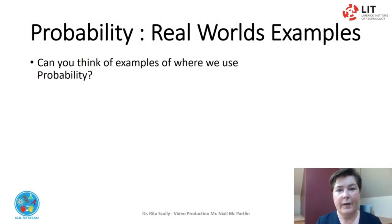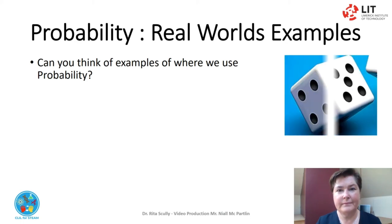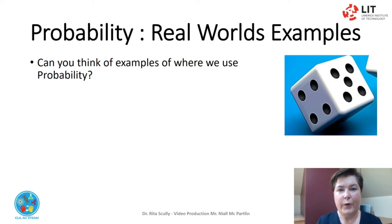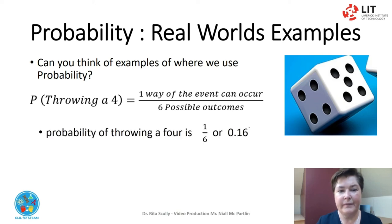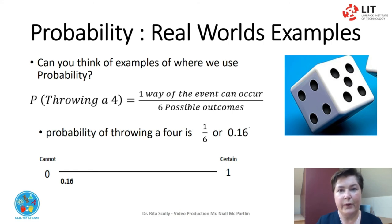Can you think of examples of where we can use probability? Let's consider a six-sided dice. Each number has an equal probability of appearing when the dice is thrown. Let's consider the probability of throwing a 4. We can write this as: the event of throwing a 4 equals 1 way of the event occurring — the 4 — over 6 possible outcomes, 1 to 6 on each side of the dice. The probability of throwing a 4 is 1 over 6, or 0.16 recurring. This can be represented on the probability line as 0.16.